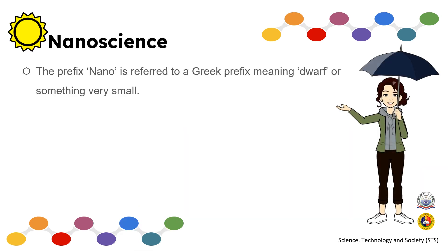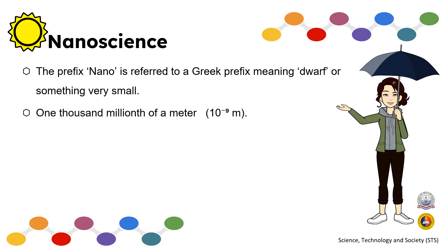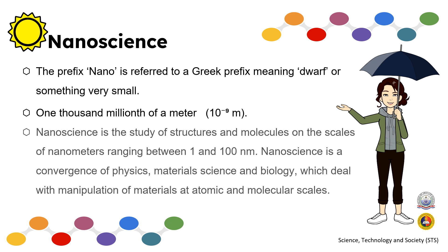Nanoscience. The prefix 'nano' is a Greek prefix meaning dwarf, or something very small, and depicts one billionth of a meter, or 10 to the power of negative 9 meters. Nanoscience is the study of structures and molecules on the scale of nanometers, ranging between 1 and 100 nanometers.